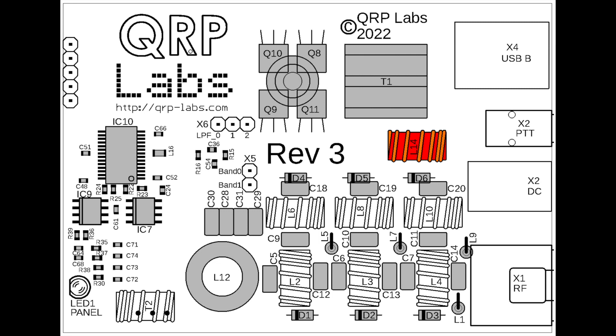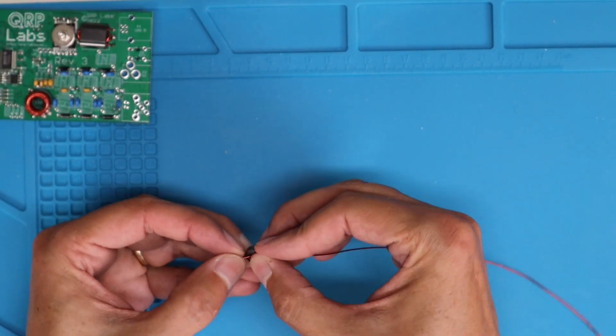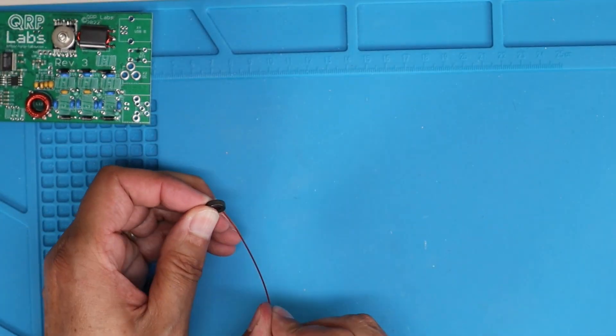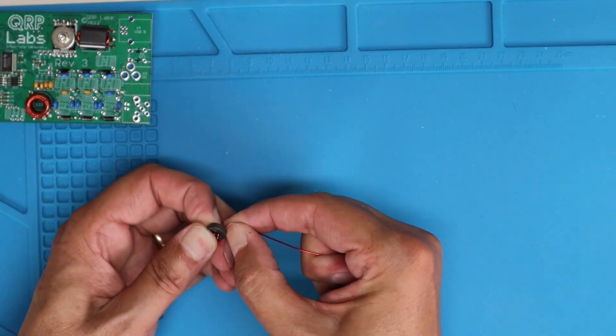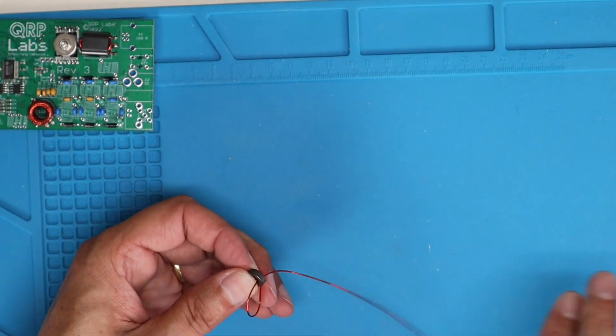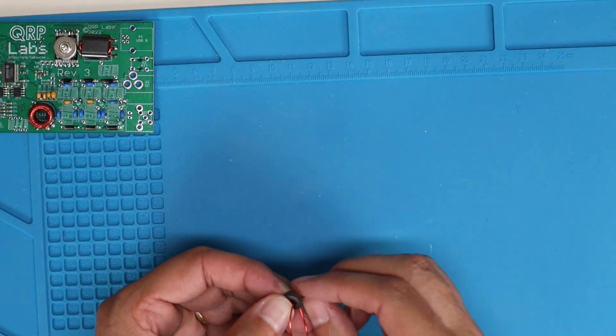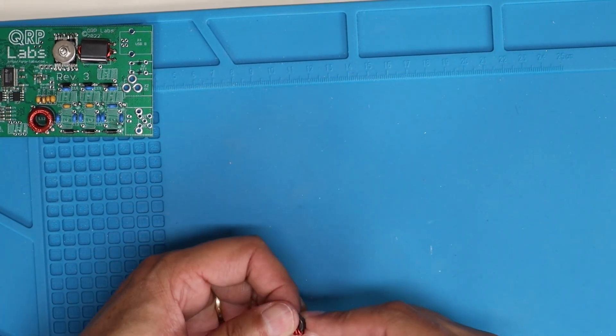So next we're going to wind L14. And L14 uses the other all black T37-43 core, and then we're going to use the remainder of our 22 gauge wire. And then we're going to wind a total of 10 turns on this one.